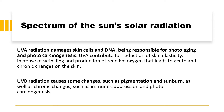UVA radiation damages the skin cells and DNA. It reaches the deeper layers and is held responsible for photoaging and photocarcinogenesis. It is also said to affect skin elasticity, increase wrinkling, and produce reactive oxygen radicals that lead to acute and chronic changes on the skin. Whereas ultraviolet B radiation causes changes such as pigmentation, sunburn, as well as chronic changes such as immunosuppression and photocarcinogenesis.